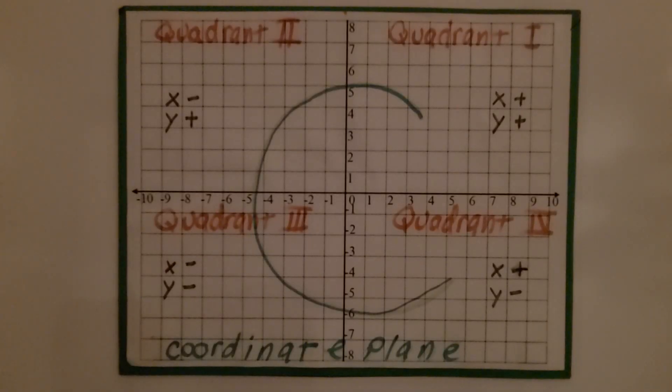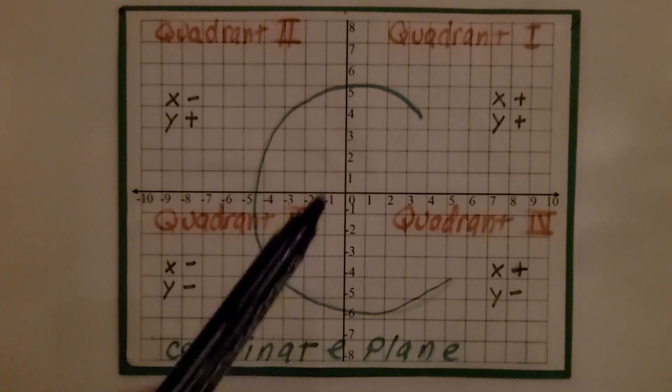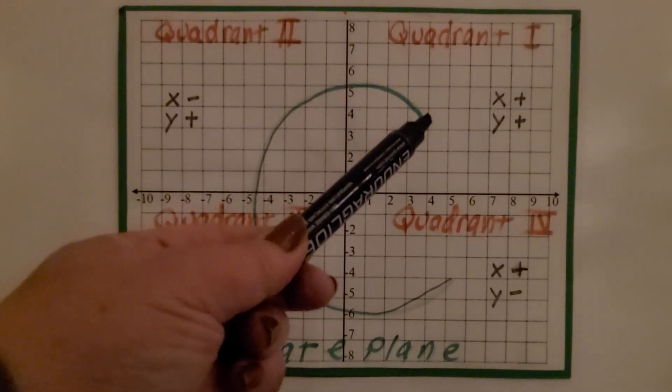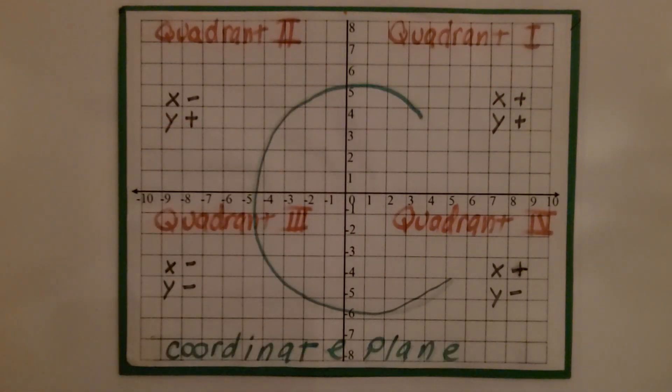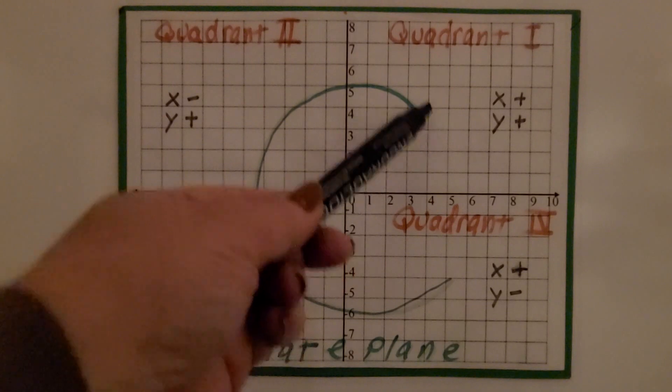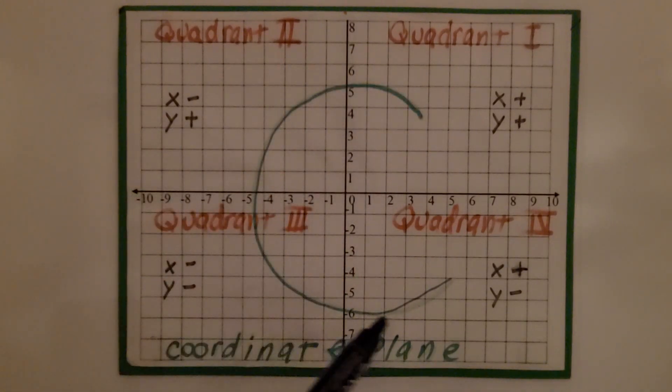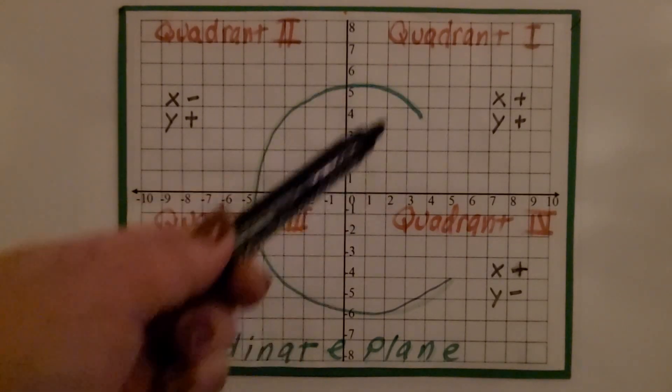On a coordinate plane, there are four quadrants, starting in the upper right corner. We can imagine the letter C for coordinate plane to help us remember which quadrant is which: quadrant 1, quadrant 2, quadrant 3, quadrant 4. In this lesson, we're going to be working in quadrant 1.